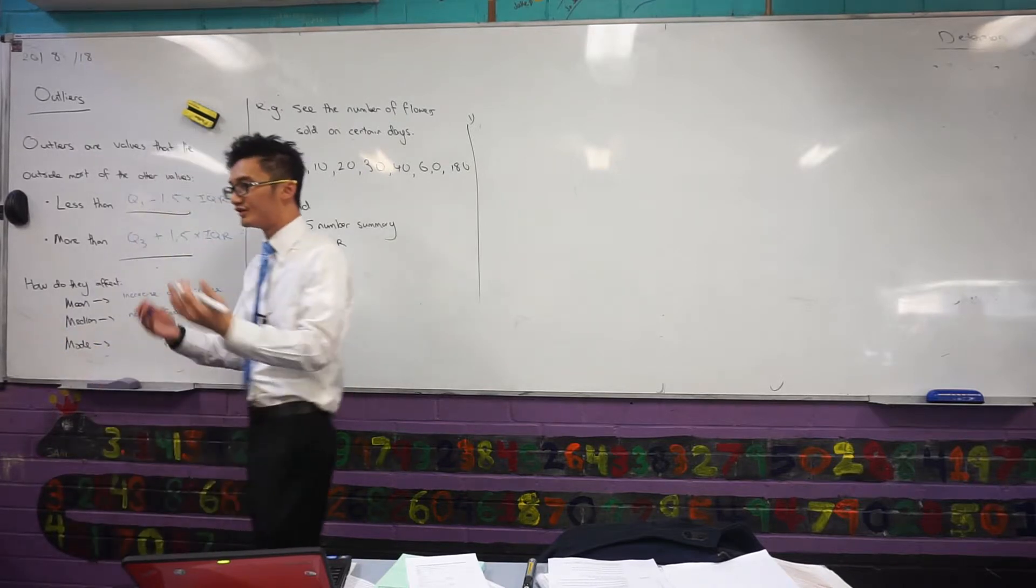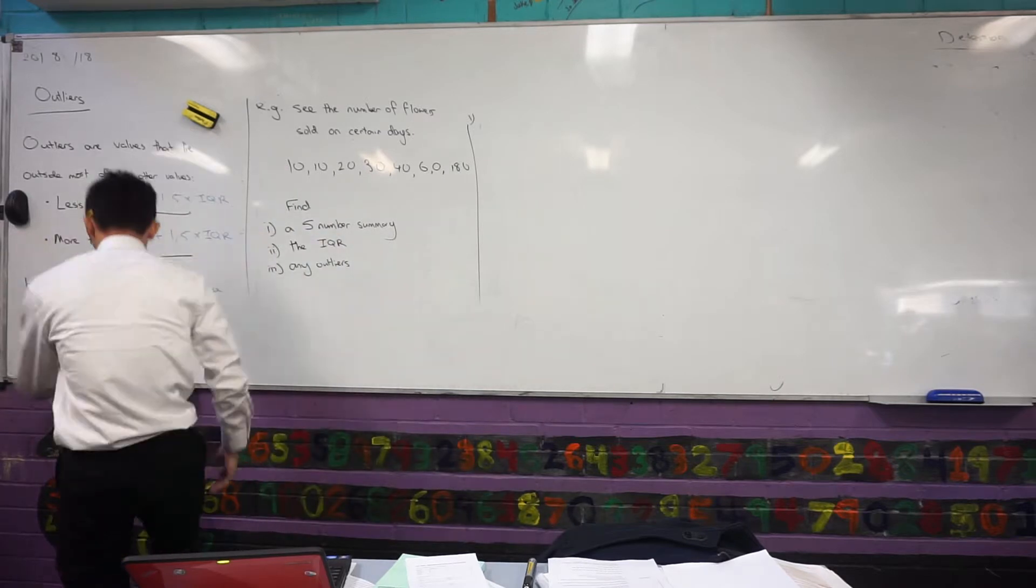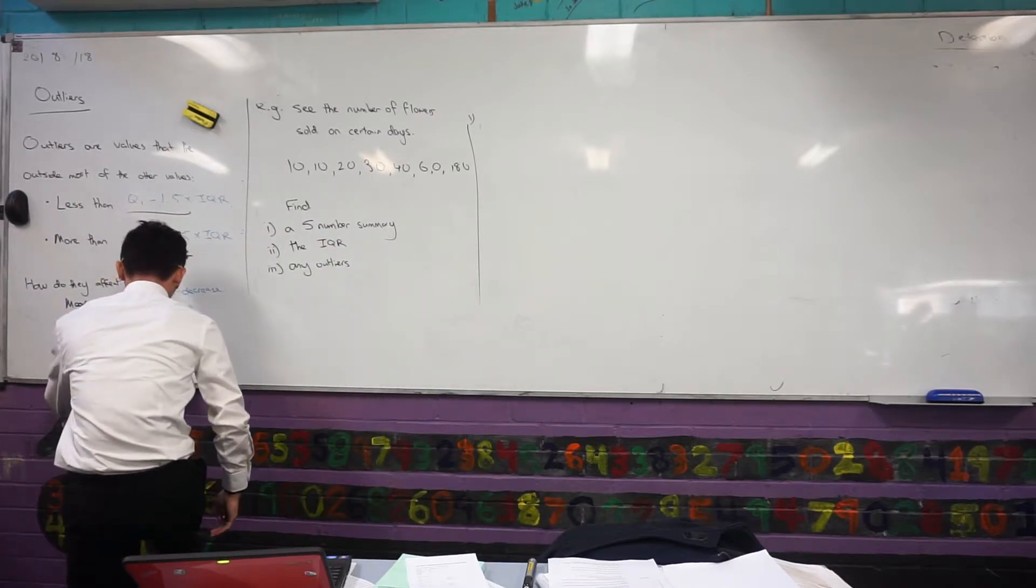And similarly with mode, I want to know which one occurs the most often, so outliers aren't really going to play a role in that either. So just some observations there.